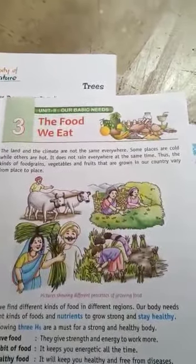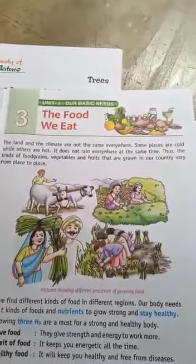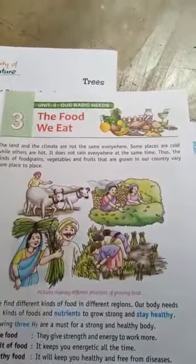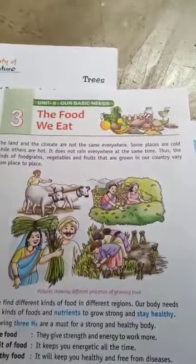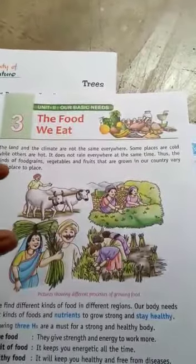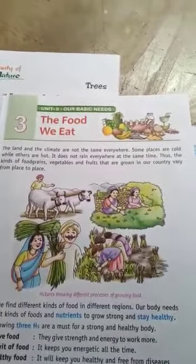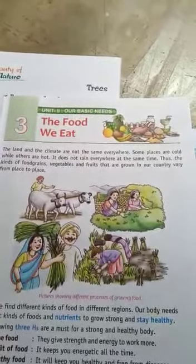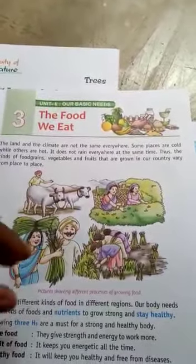Some climates are moist, some are dry, and some are cold. In Kashmir, it is very cold, whereas in our place we have extreme climate. Extreme climate means in summer we have very high temperatures, and in winter we have very low temperatures. Some places have cold weather almost all year, while deserts and other places are hot throughout the year. According to different places, our food habits also differ.